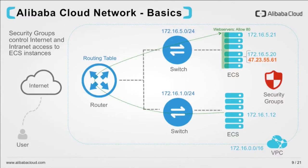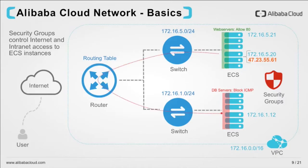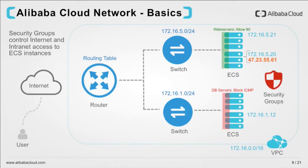Security groups can also be used to create logical security domains. Let's say you wanted to block all ICMP traffic on your database servers — you would create a new security group with a rule to deny ICMP traffic and then add all your database servers to that security group. You need to understand that public IPs in Alibaba Cloud are nothing but NATed IPs to the private interfaces. Hence, in this example where we allowed port 80 on our set of web servers, port 80 would also be accessible from the internet.